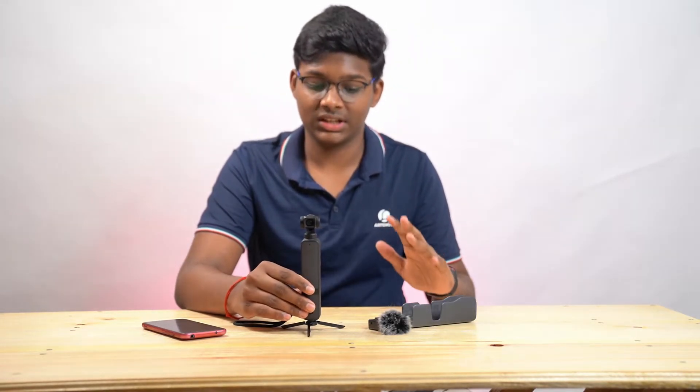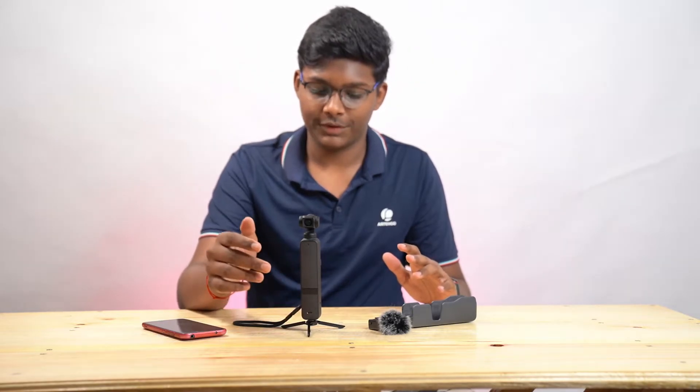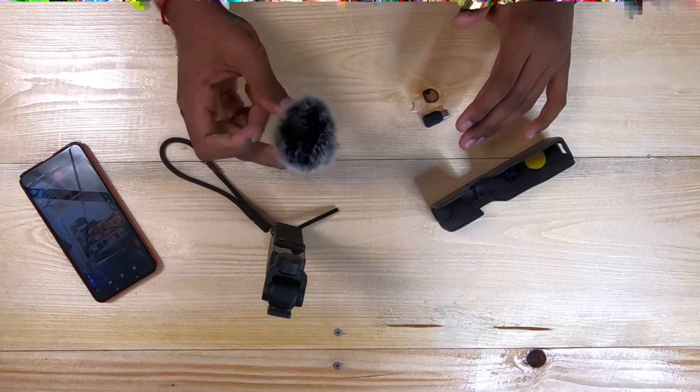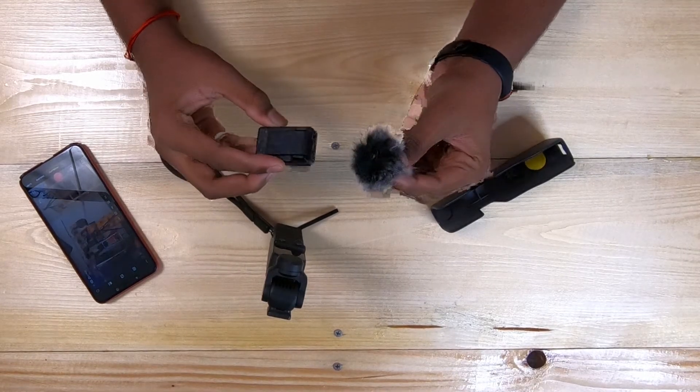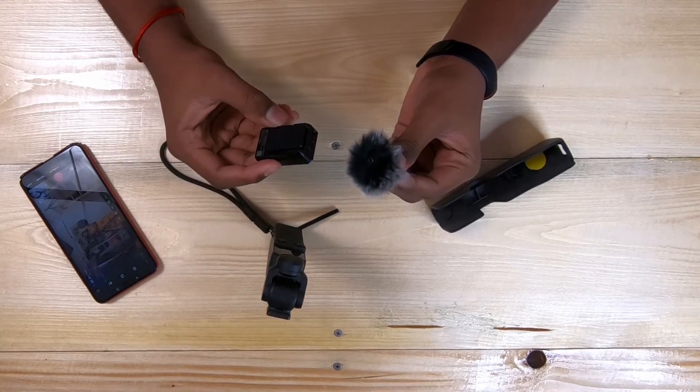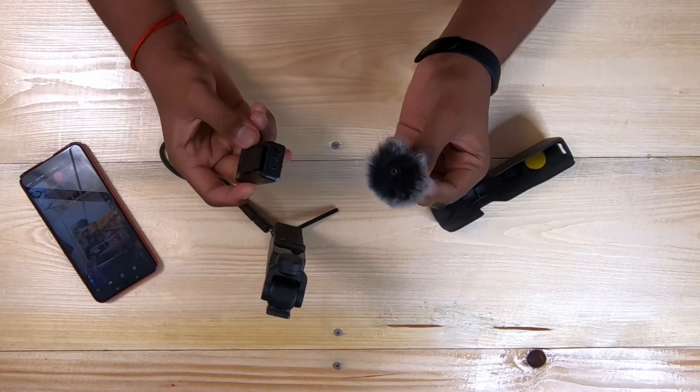Now, let's talk about the accessories which come with the pocket. First, it's the tripod. And then, it's the wide angle lens. And then, this is the mic. Which comes with this dead cat on top. This is used to reduce the wind noise or the obstructing noise.